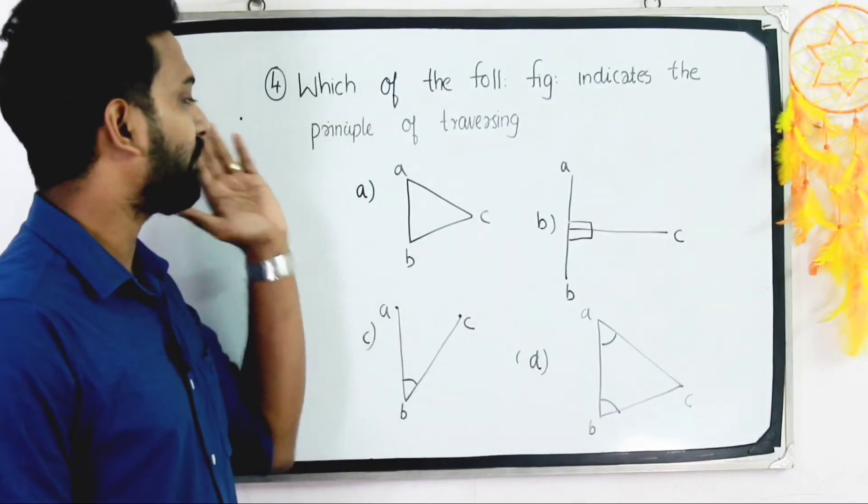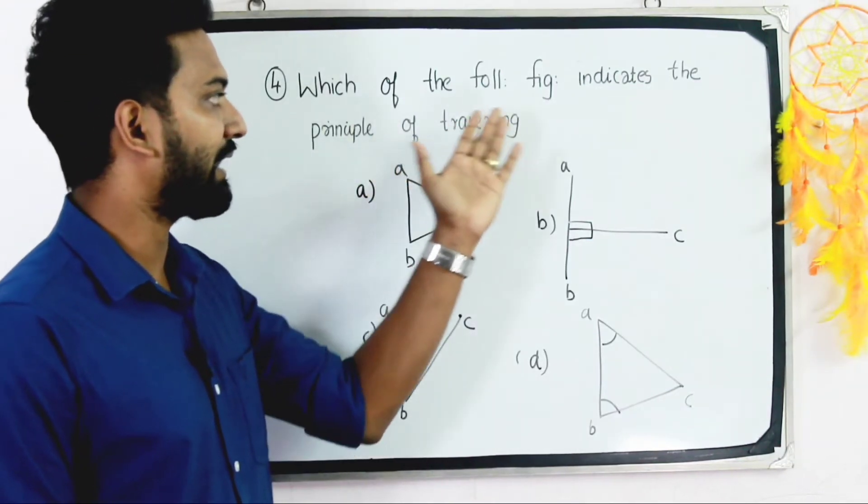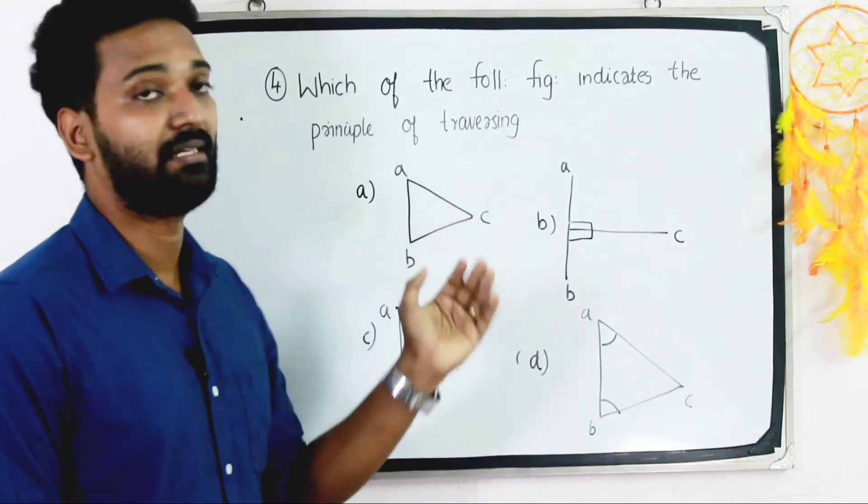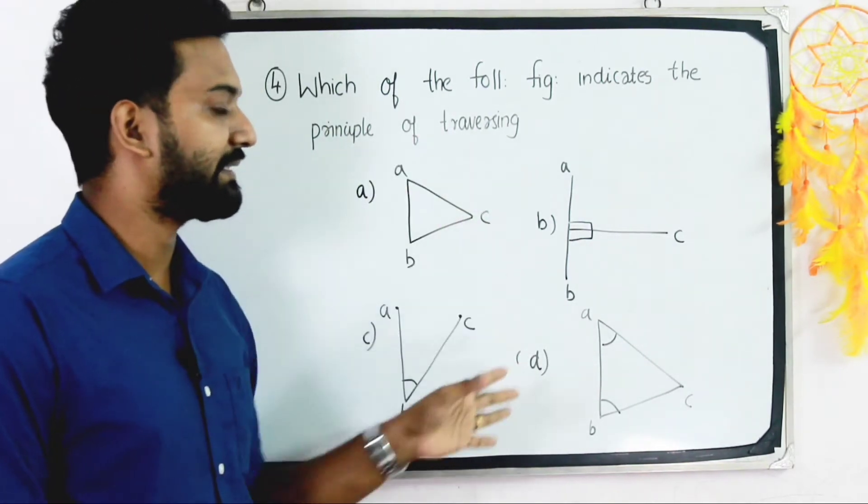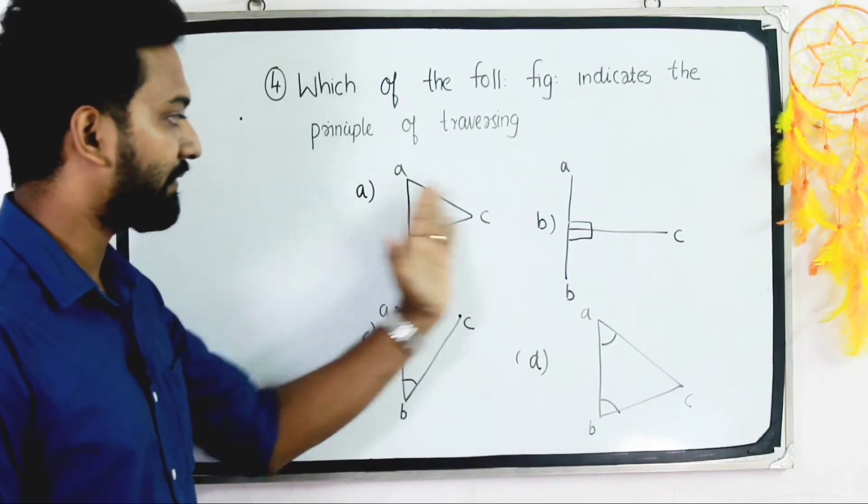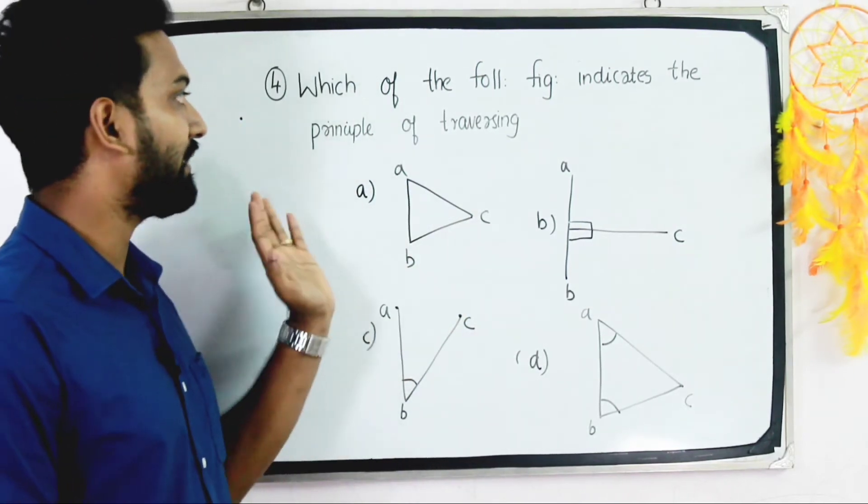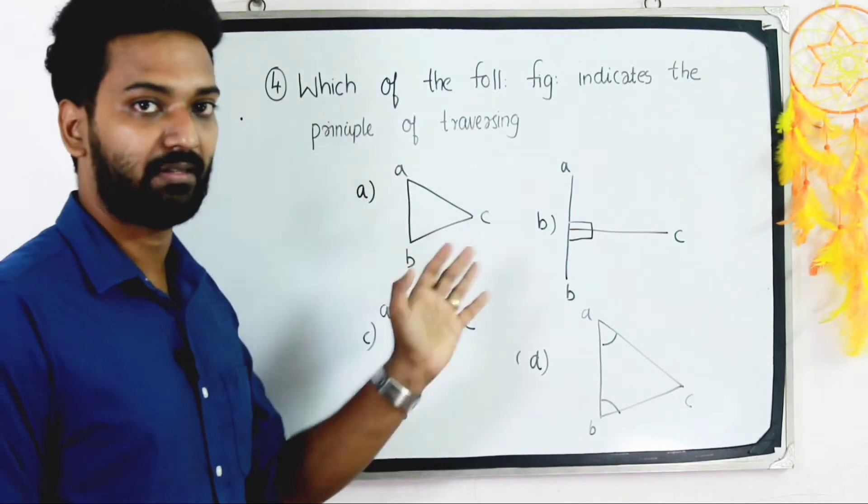Which of the following figures indicates the principle of traversing? We have five methods of surveying. This question relates to these diagrams showing the traversing principles.